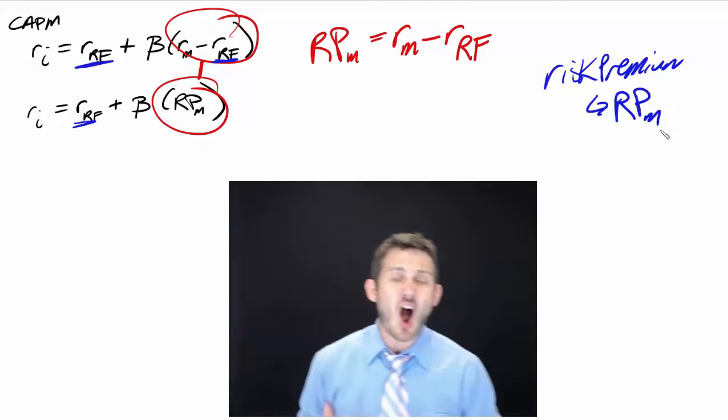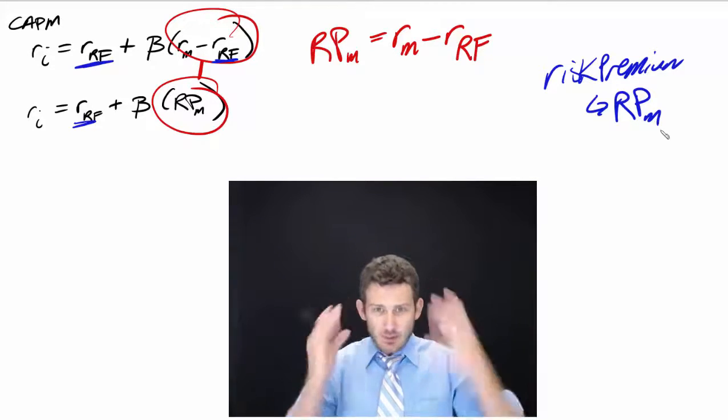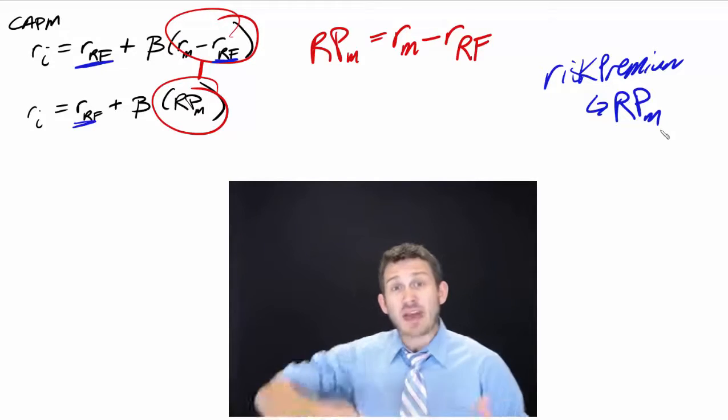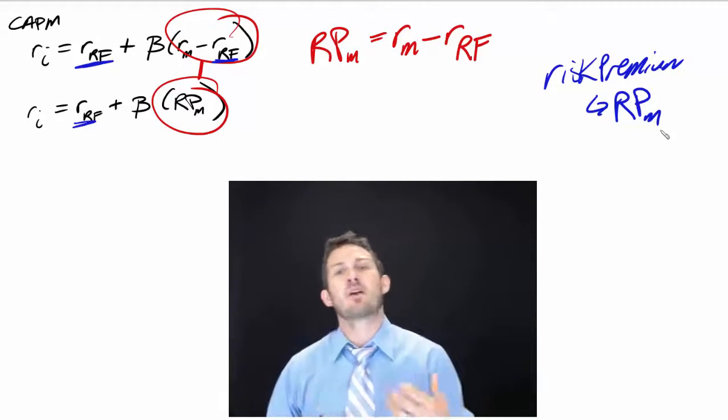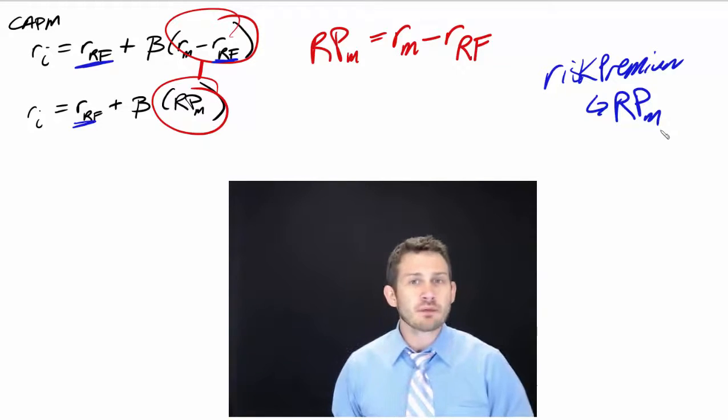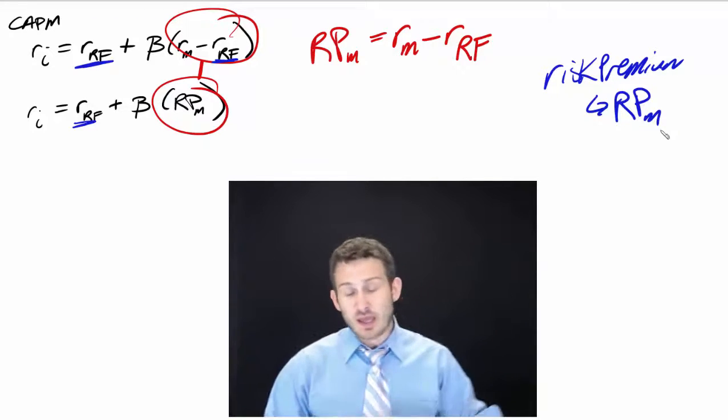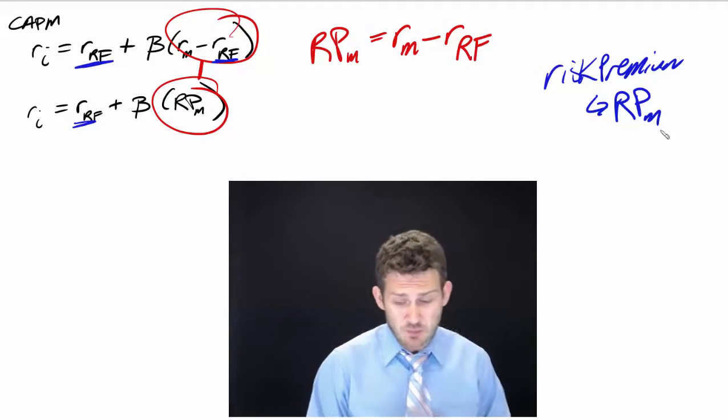One of the things I commonly see with students is that we take or are given the risk premium, and then we subtract off the risk-free rate, which is going to give us a very different number. Alternatively, we might see something and we might go the opposite direction with it.